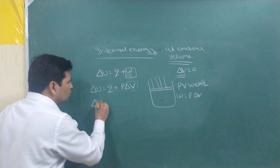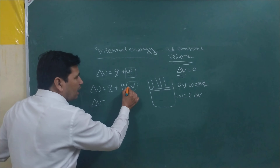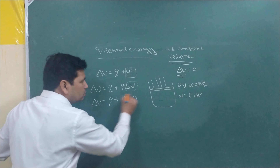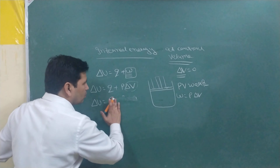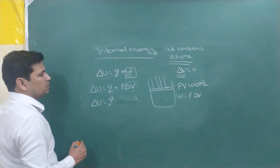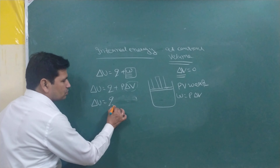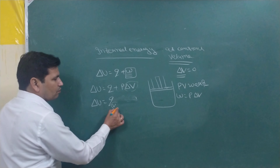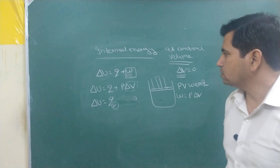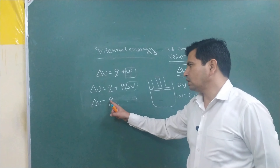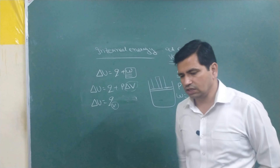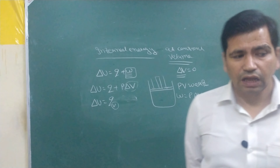So we write delta U equals Q plus P into zero, and since delta V is zero, P delta V equals zero. This means the change in internal energy equals the heat given at constant volume, Qv — where V means volume is constant. We have now proved that change in internal energy equals the heat given at constant volume.